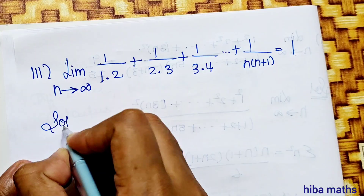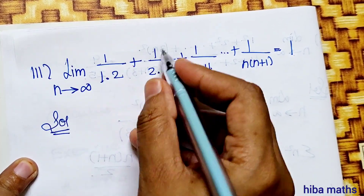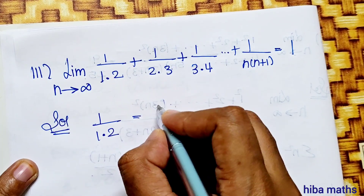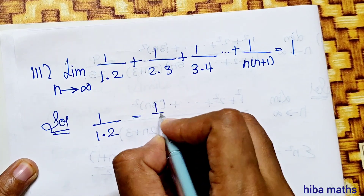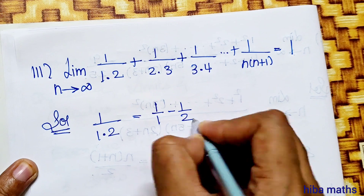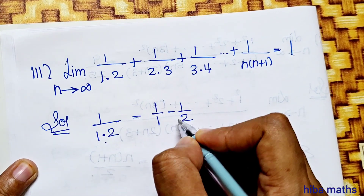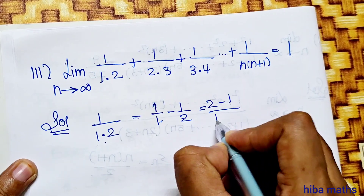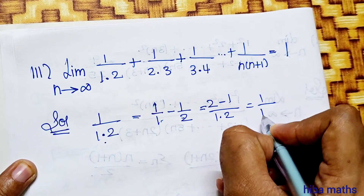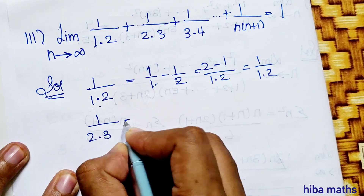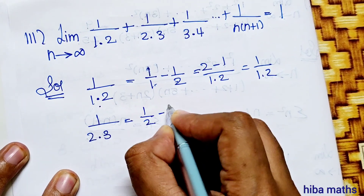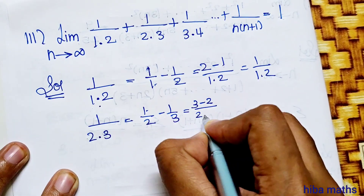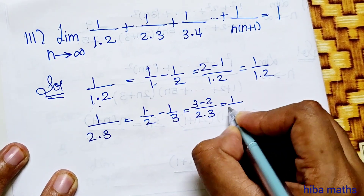Now let's solve the next problem by splitting the terms. We use partial fractions: 1 by 1 into 2 equals 1 by 1 minus 1 by 2. Similarly, 1 by 2 into 3 equals 1 by 2 minus 1 by 3. And 3 minus 2 over 2 into 3 gives 1 by 2 into 3.